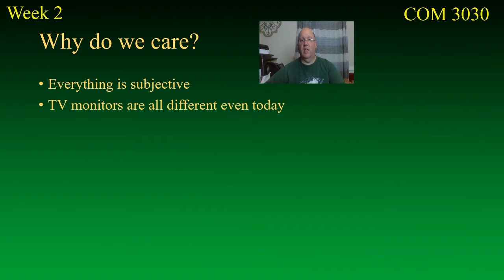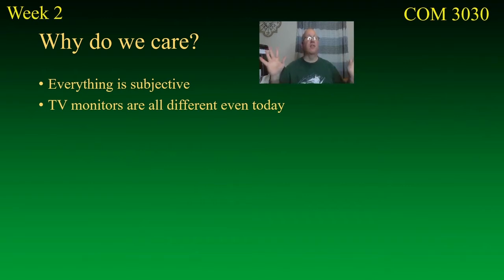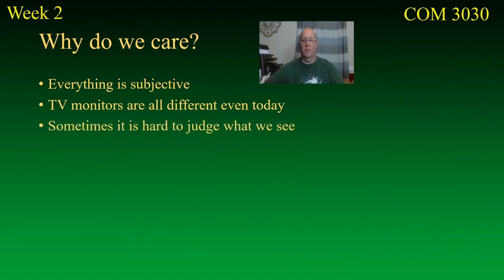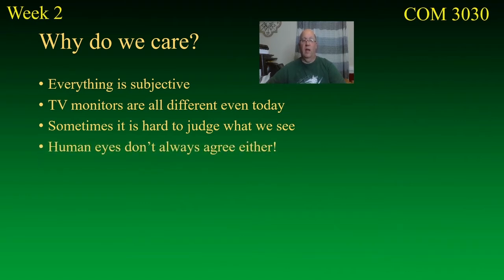TV monitors are all different even today — they used to be a lot worse. NTSC was sometimes called 'never the same color.' The old TV monitors used to have a hue control, and when you're a kid growing up in the 70s and 80s, you'd open up the little panel in front of the TV and start turning the knobs, and the faces would come out all purple. One of those knobs was the hue control, which basically throws everything off calibration, so you never know if that's exactly right. And you really need an objective view.